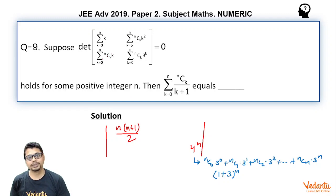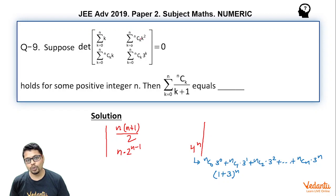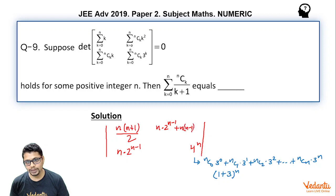Next, consider the row 2 column 1 element: sigma k equal to 0 to n of nCk·k. This essentially becomes n·2^(n-1). Similarly, the row 1 column 2 element becomes n·2^(n-1) + n(n-1)·2^(n-2).